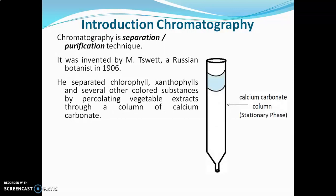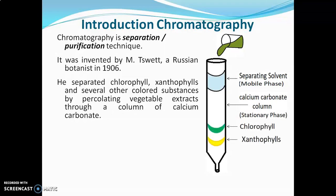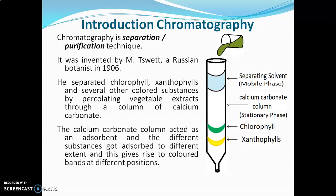He packed calcium carbonate in a glass column, then allowed a separating solvent to pass through the calcium carbonate packing. He added vegetable extract and afterwards found that colored bands were separated. The calcium carbonate column acted as adsorbent and the different substances got adsorbed to different extents, giving rise to colored bands at different positions.